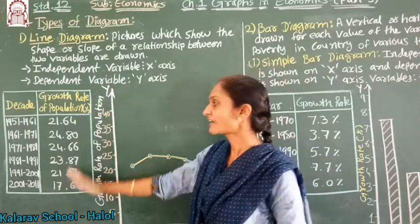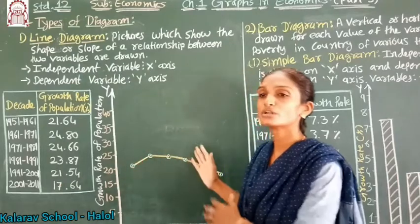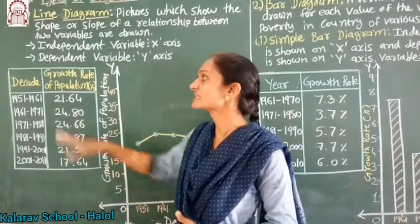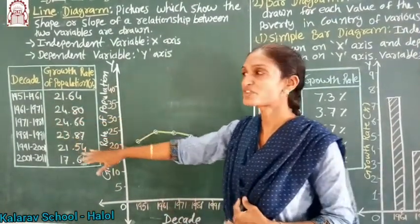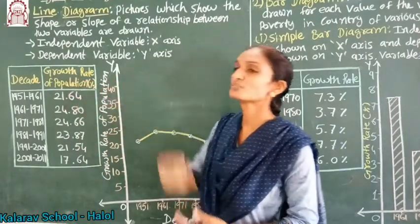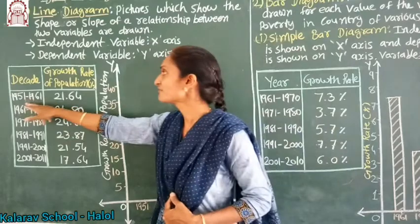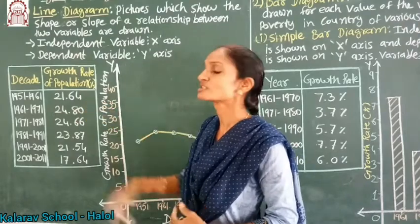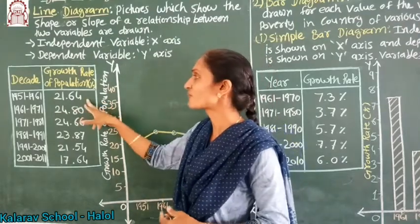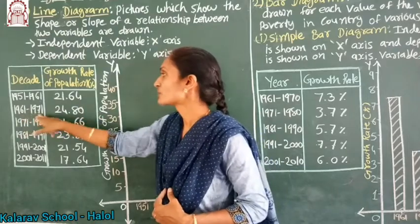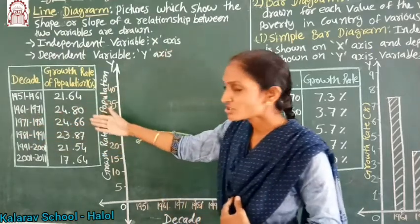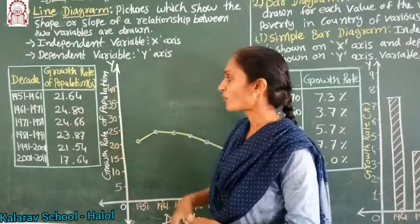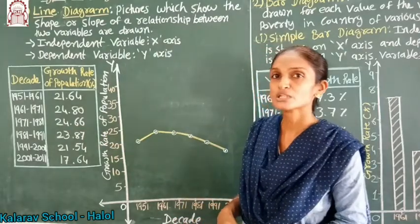So with the given data, we have to plot on a line graph. The data is given in decades — DICAD means a 10-year duration of time is given along with the growth rate of population in percentage. So from 1951 to 61, the percentage growth rate of population is 21.64. Then 61 to 71, 71 to 81 — the 10-year durations give values of 24.80 and 24.66, then 23.87.